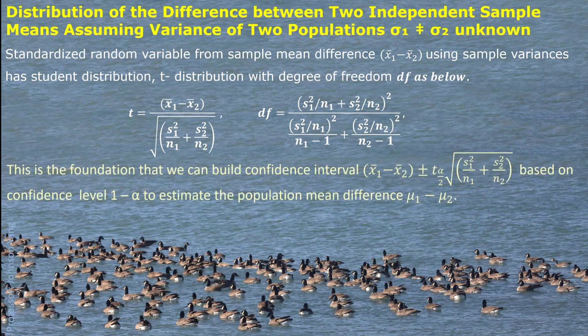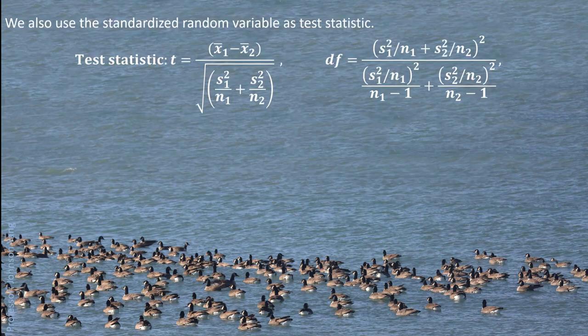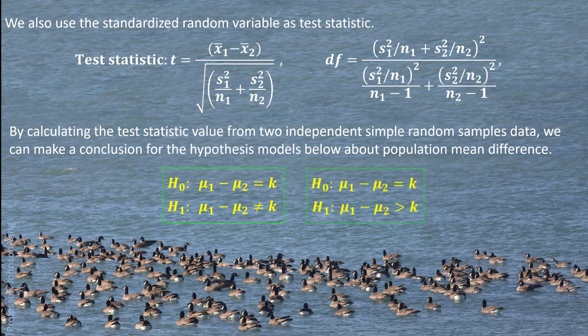Similarly, we can build up the confidence interval and the corresponding t critical value can be found in Excel conveniently. We can use the standardized random variable as a t-test statistic. By calculating this t-test statistic value from two independent simple random sample data, we can make a conclusion for the hypothesis about the population mean difference — either two-tailed or one-tailed.